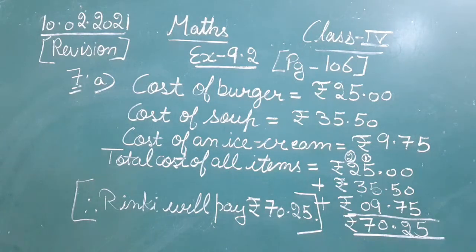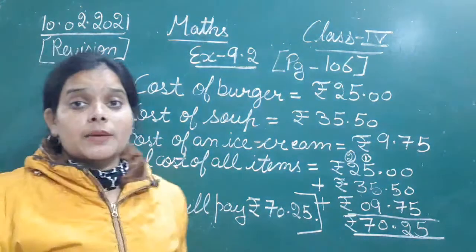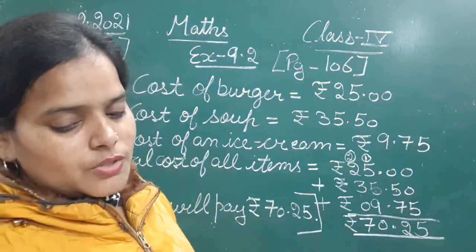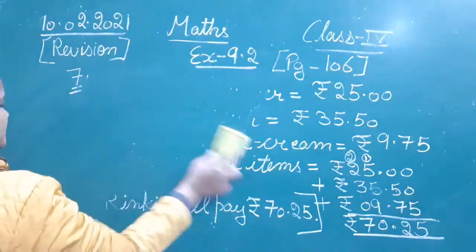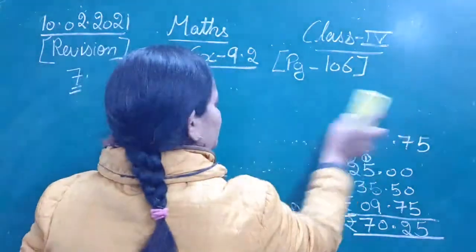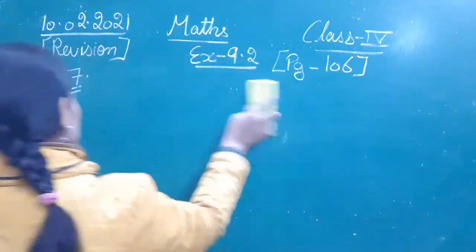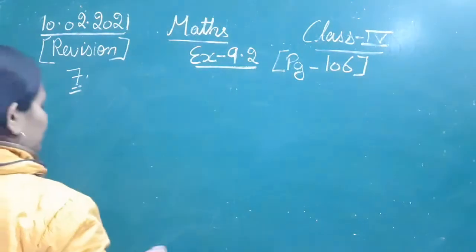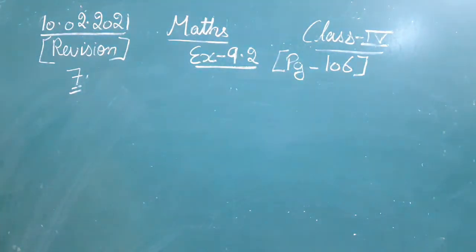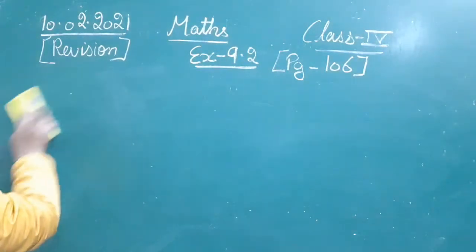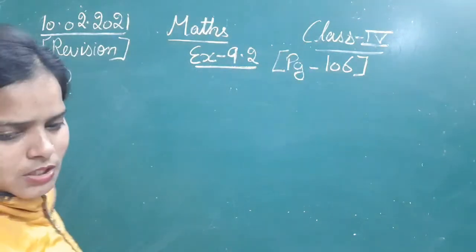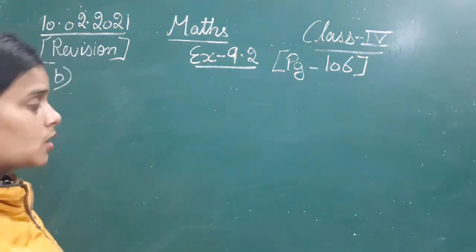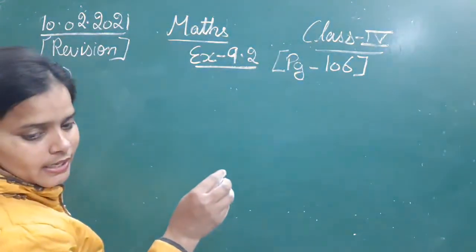Moving next to part B. Now we will calculate the amount that will be paid by Ambika. In part B, Ambika has bought a pizza, a cake and a coke.